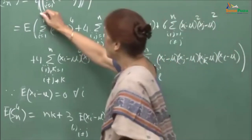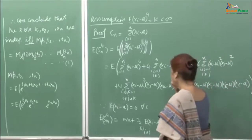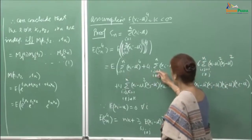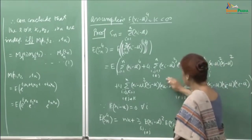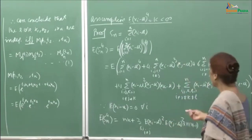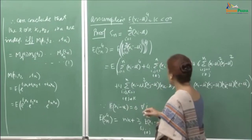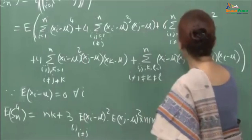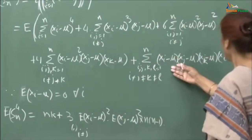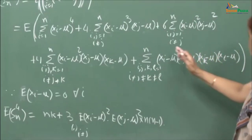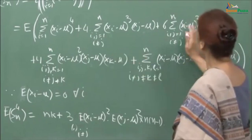Since expectation is linear, it can go inside the summation. Using independence of x_1, ..., x_n, the expectation of a product equals the product of expectations. Since E[x_i - mu] = 0 for all i, the cross terms involving odd powers vanish. The terms with 4 different indices also vanish because each factor has expectation 0 under independence. So we are left with: sum_i E[(x_i - mu)^4] plus 6 times sum_{i≠j} E[(x_i - mu)^2] E[(x_j - mu)^2].